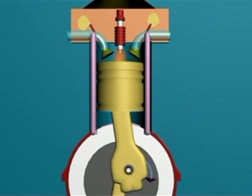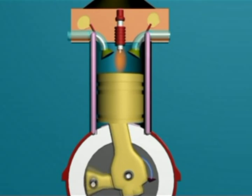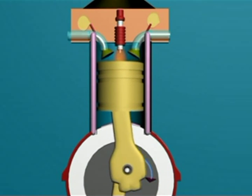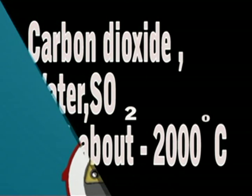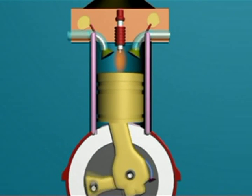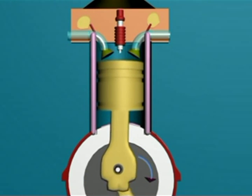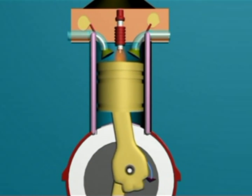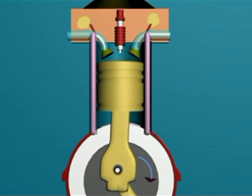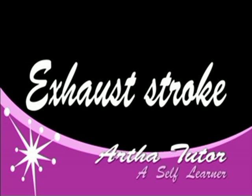Power stroke: Both the valves remain closed. The spark plug produces sparks of high voltage. The fuel mixture gets ignited and produces by-products like carbon dioxide, water, and a lot of heat — about 2000 degrees centigrade — on combustion. The heated gas mixture expands outward with great force. Due to expansion, the temperature of gases drops and the piston moves downwards. Work is done only in this stage, i.e., the power stroke stage.